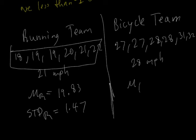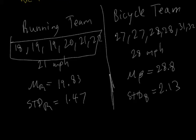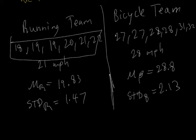Now, the mean of bicycling is 28.8, and the standard deviation of bicycling is 2.13.